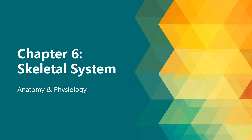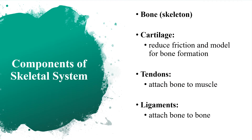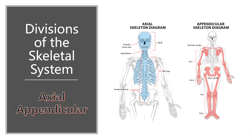The lesson for today will be Chapter 6, All About Skeletal System. The components of the skeletal system include the bone, which is the main skeleton. You also have the cartilage, which reduces friction and serves as a model for bone formation. You also have the tendons, which attach bone to muscle, and the ligaments, which attach bone to bone. There are two divisions: the axial skeleton and the appendicular skeleton.